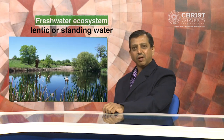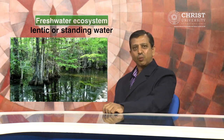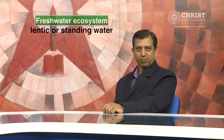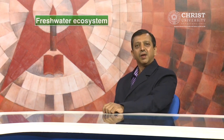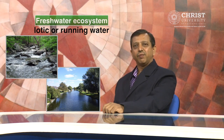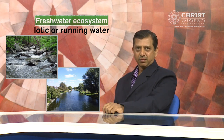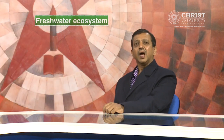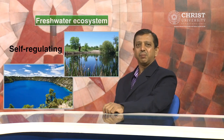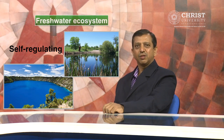Lakes, ponds, bogs, swamps, marshes and puddles are examples of lentic or standing water ecosystems. Rivers and streams are the best examples of lotic or running water ecosystems. Among the lentic or standing water ecosystems, lakes and ponds are good examples of a self-regulating lentic or standing water ecosystem.